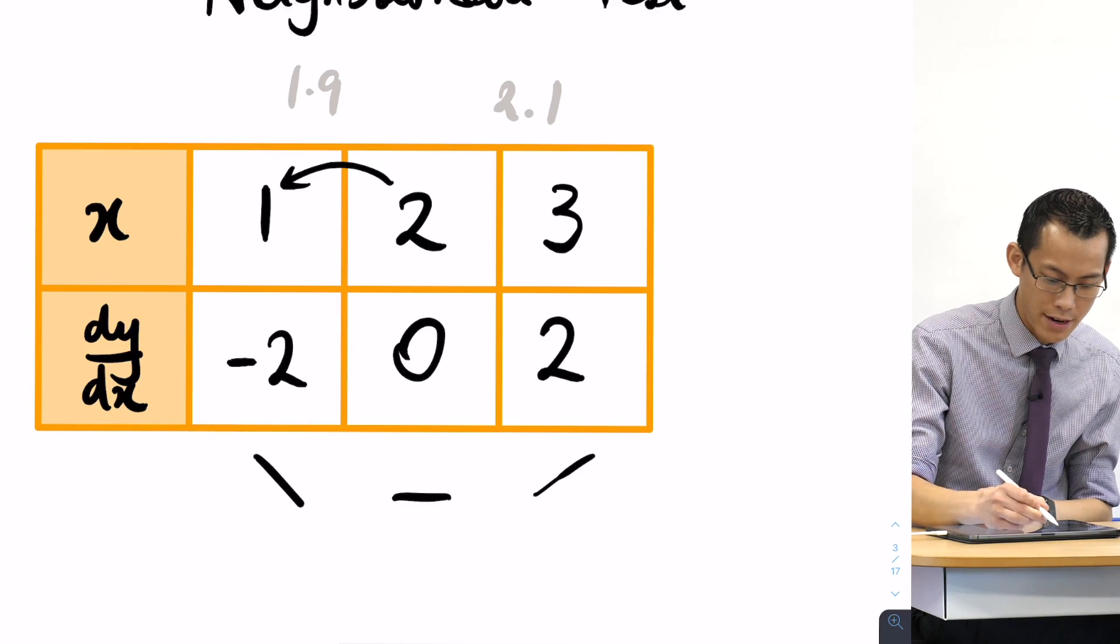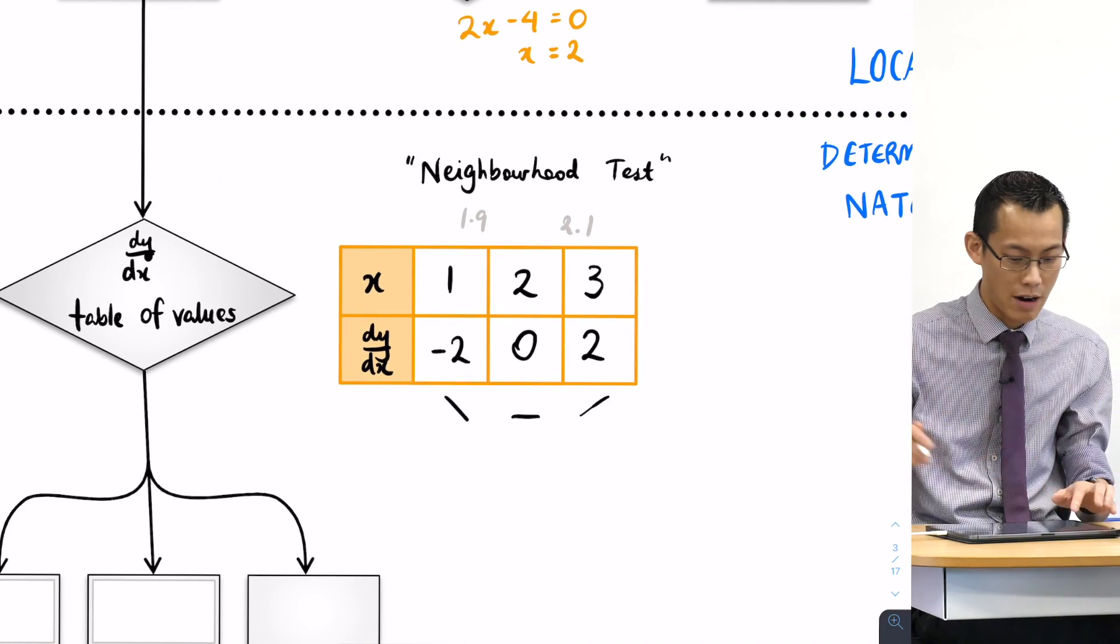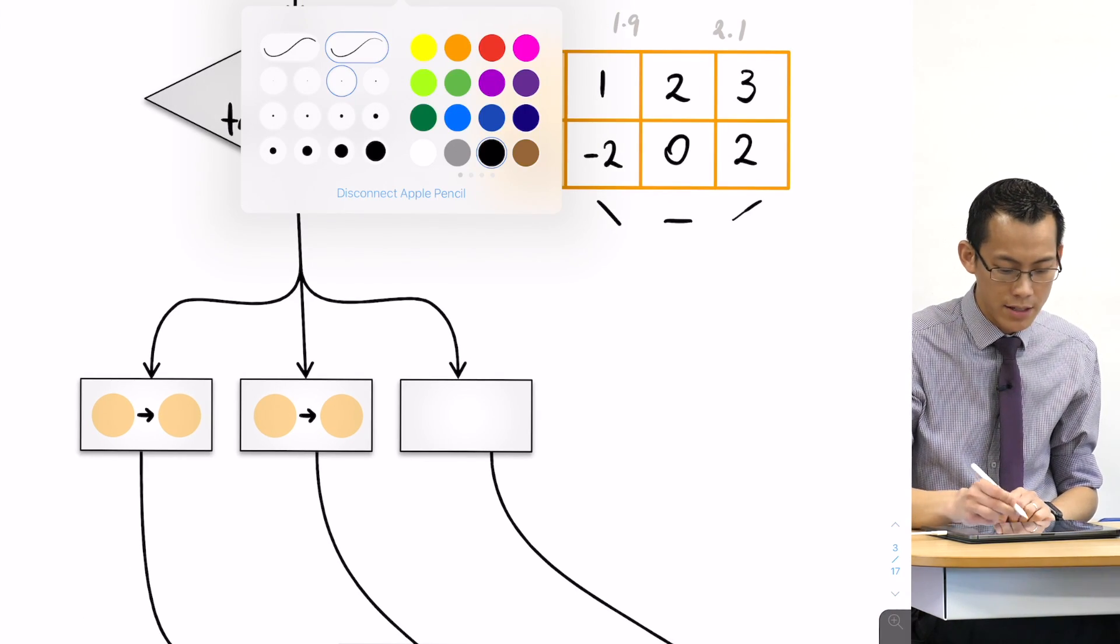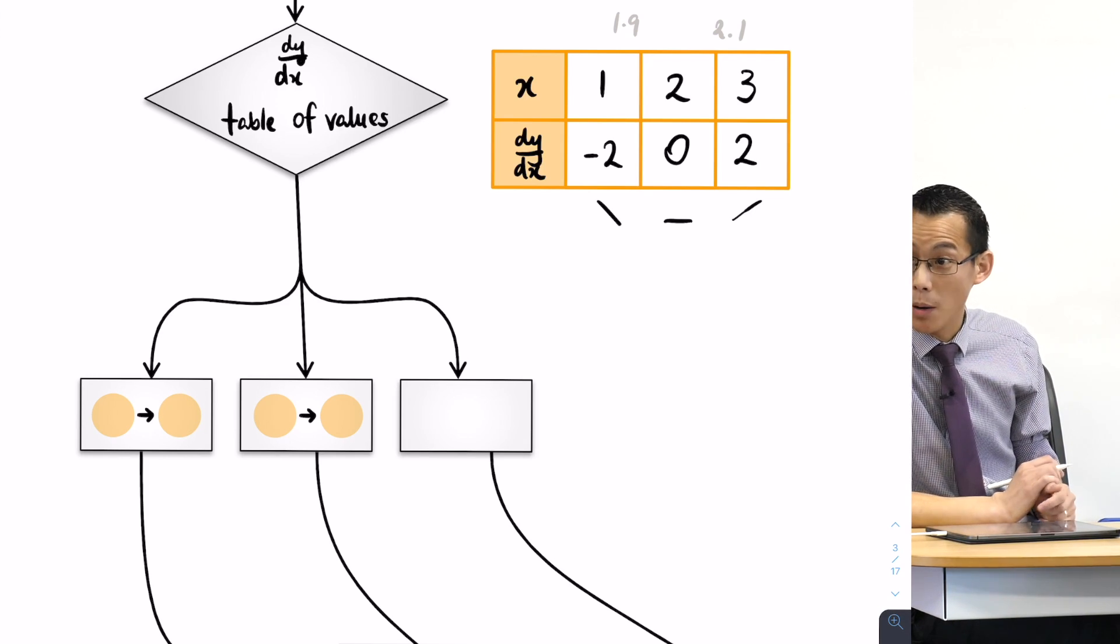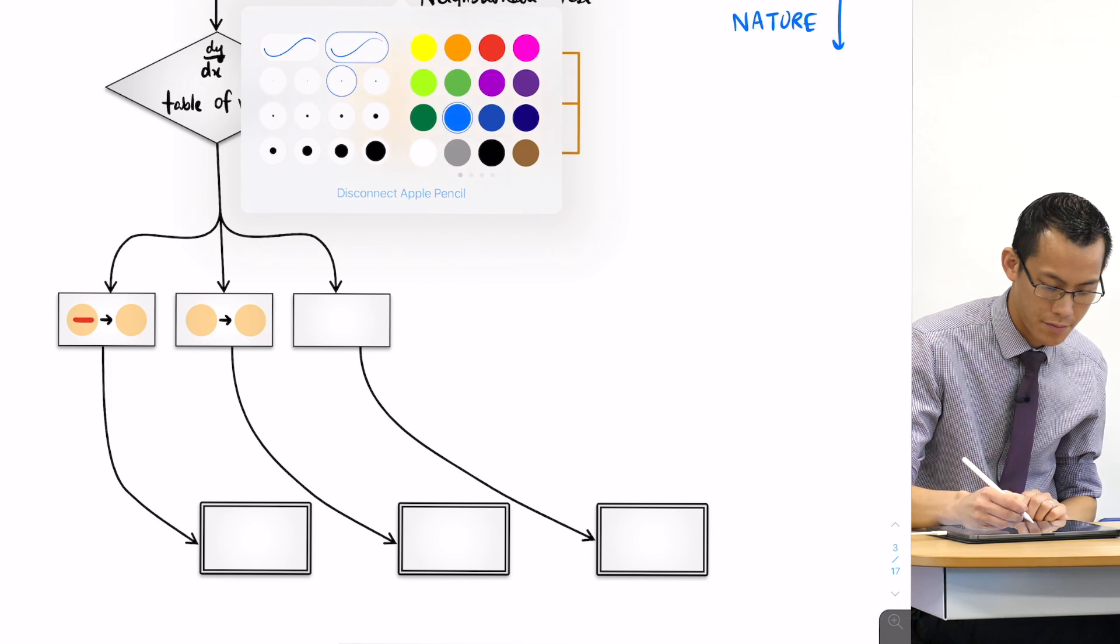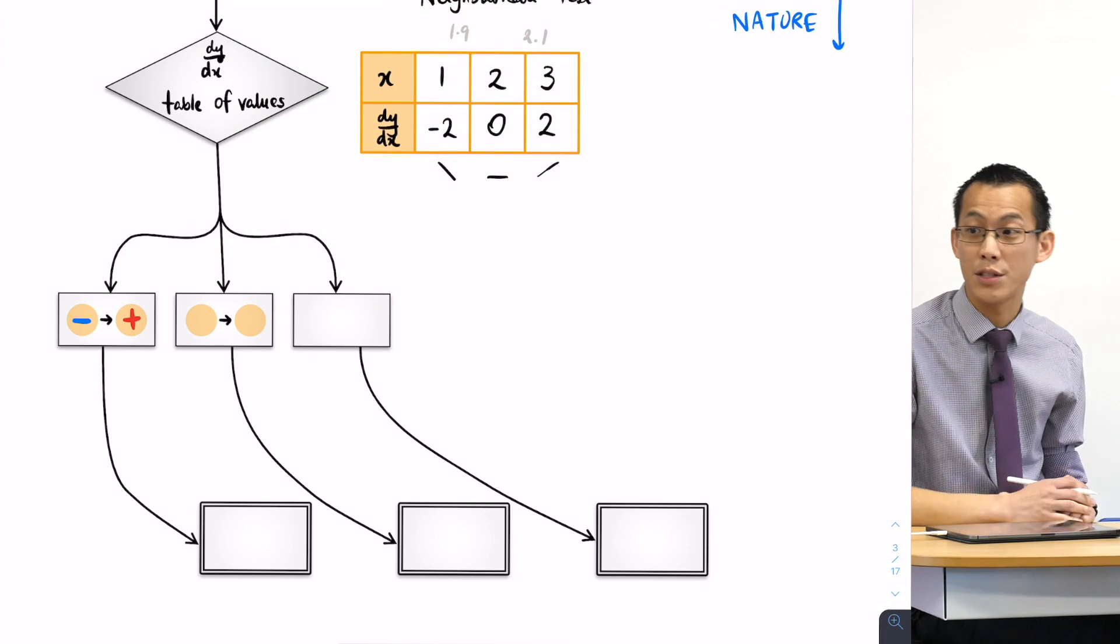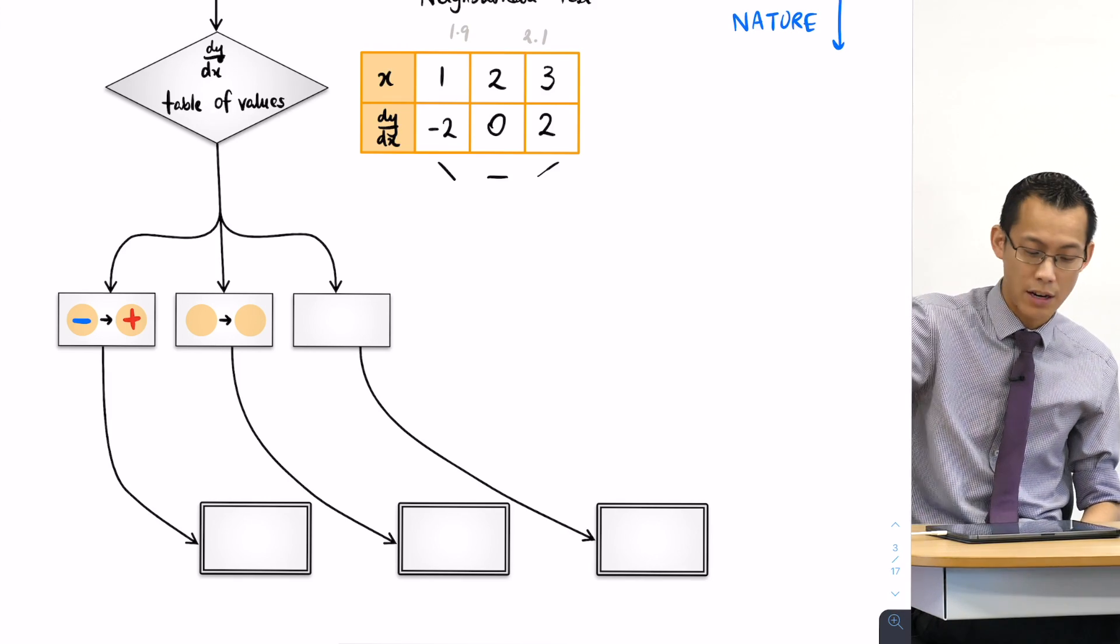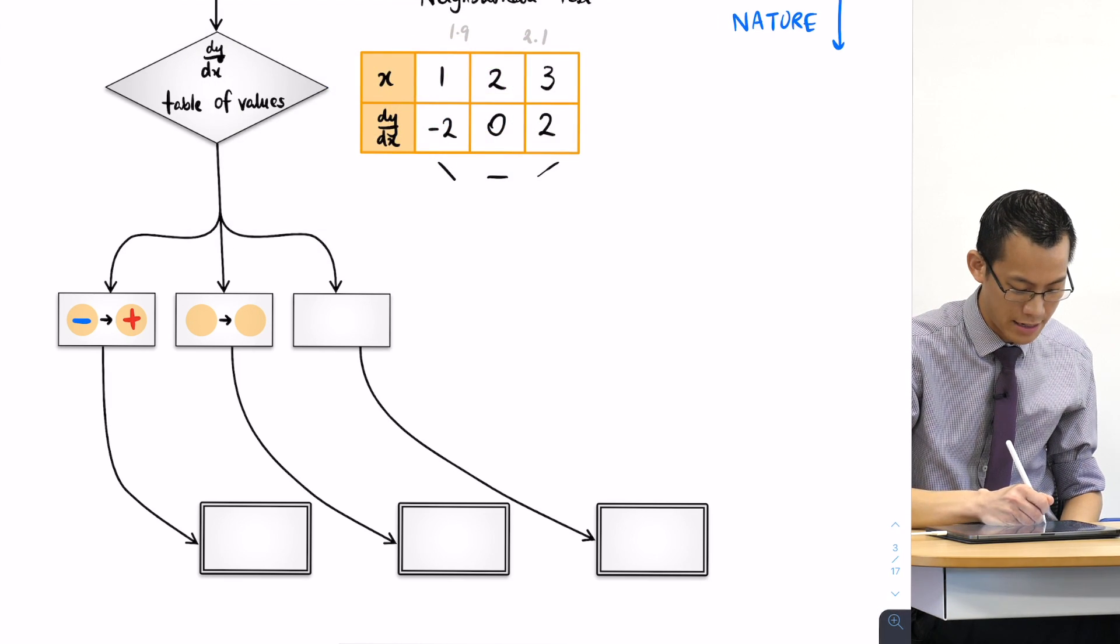All right, so whoopsie daisy, I erased most of my table which I didn't mean to. So I've got here now enough information to describe what's going on. Okay, what I'm looking for is what is the change in sign, right? What is the change in sign for this one? It's gone from what to what? Negative to positive, right? Negative to positive. Like so. Okay, now you can already see from that little kind of series of lines that I drew underneath our table values, you can already see that is a minimum turning point. I'm going to write that down the bottom: minimum turning point.